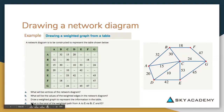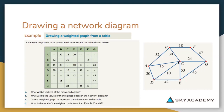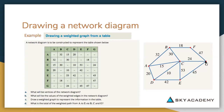For question D: what is the total of the weighted path from A to E via B, C, and G? Grab your calculator. From A to B the value is 32. Then B to C has a value of 30. C to G has a value of 24. And from G to E the value is 45. Adding all those weights together: 32 + 30 + 24 + 45 gives a total weighted path of 131 from A to E via B, C, and G.